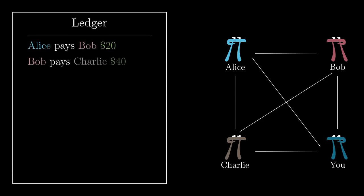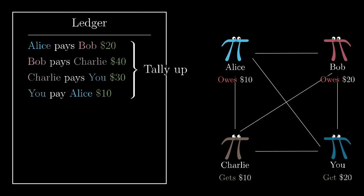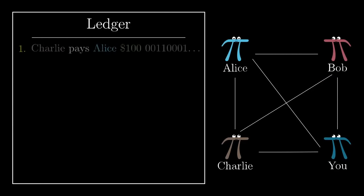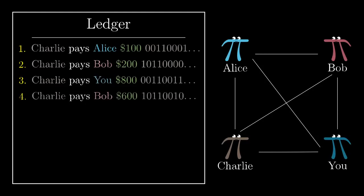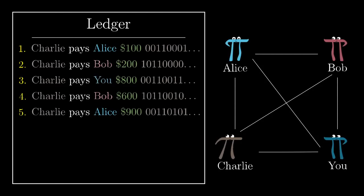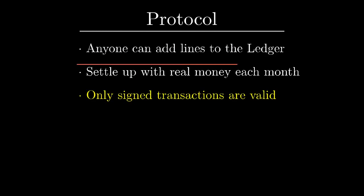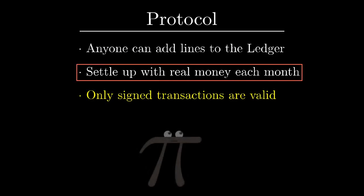But even still, if you were to really do this, you would be relying on an honor system of sorts. Namely, you're trusting that everyone will actually follow through and settle up in cash at the end of each month. What if, for example, Charlie racks up thousands of dollars in debt and just refuses to show up? The only real reason to revert back to cash to settle up is if some people, I'm looking at you Charlie, owe a lot of money.